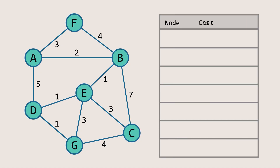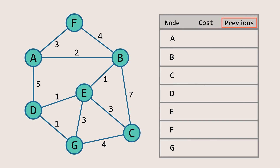First, we need to initialize a table to track our progress. In this table, the first column lists the nodes. The second column represents the cost, or shortest distance required to reach each node from our starting point. The third column shows the previous node in the shortest path, helping us trace the route from the starting point to each node.